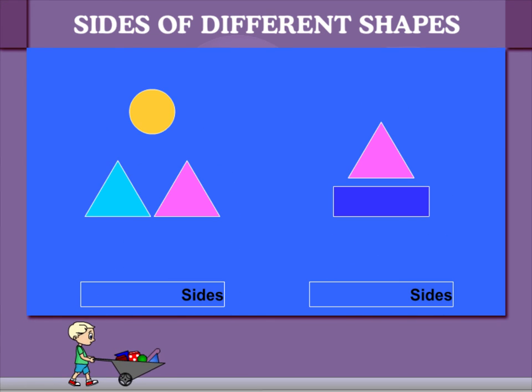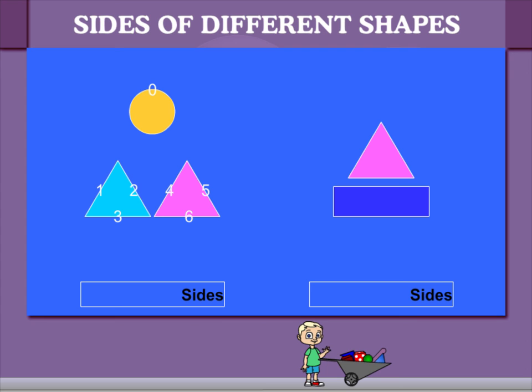Here are two more groups. Let's count. 0, 1, 2, 3, 4, 5, 6. This has six sides. Now the next one.